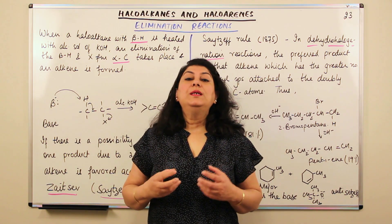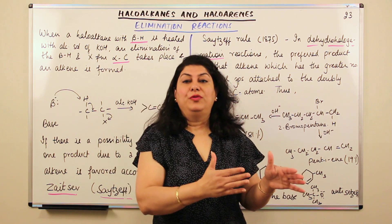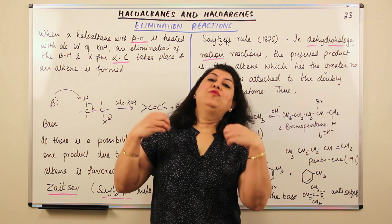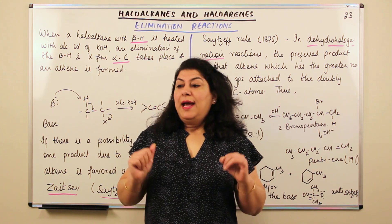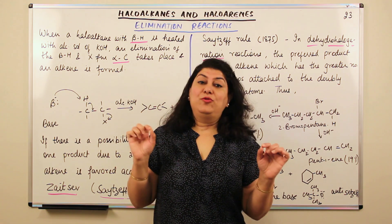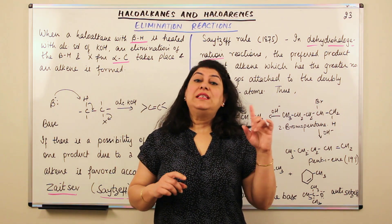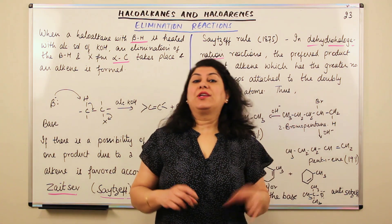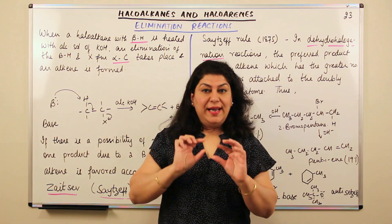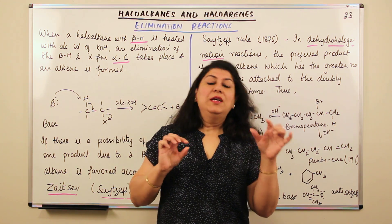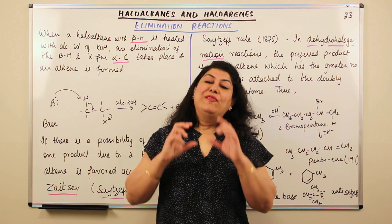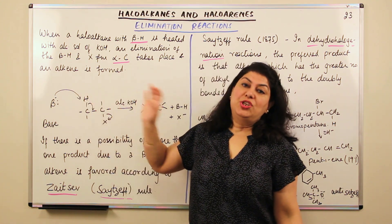As you understand from the word elimination, eliminate means to remove. So an elimination reaction is one in which something is removed from the haloalkane — specifically a halogen atom and a hydrogen. Therefore these reactions are also called dehydrohalogenation reactions. 'De' means removal, 'hydro' is hydrogen, and halogen — so it is a dehydrohalogenation reaction.